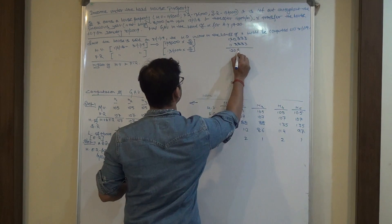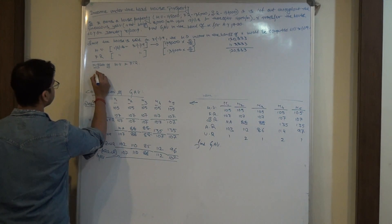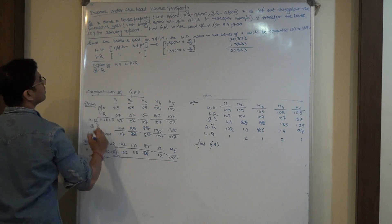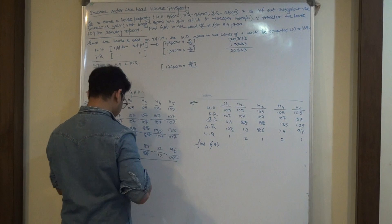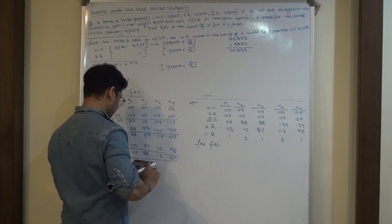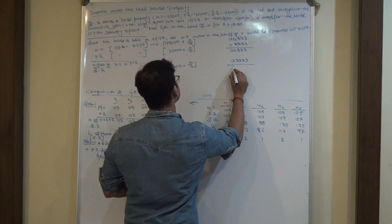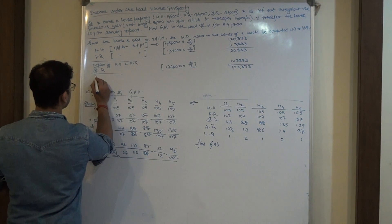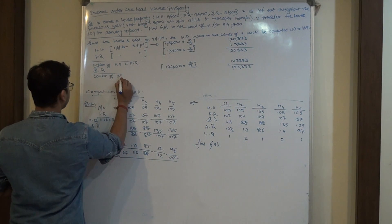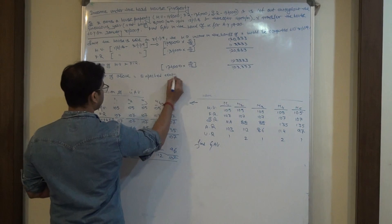In both sides — Higher or Lower. Standard Rent: 1,24,000. This one is 10,000. This is my Expected Rent. Okay?